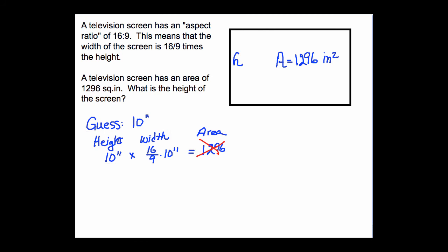Let's try another number. Let's start with 20 inches. If the height is 20 inches, the width is 16 ninths times 20 inches. And if we multiply those two together, we get the area. And is the area 1296? Well, if you do this on your calculator, you will find that it is not.